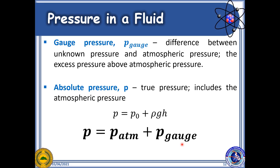On the other hand, if we keep the atmospheric pressure on the right-hand side, we get the definition of absolute pressure — the true pressure that includes atmospheric pressure. This formula is similar to the previous equation, only that we transpose the pressure terms and rewrite the subscripts: P2 becomes P and P1 becomes P0, which represents the atmospheric pressure.